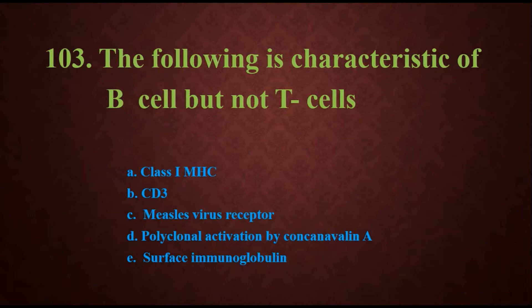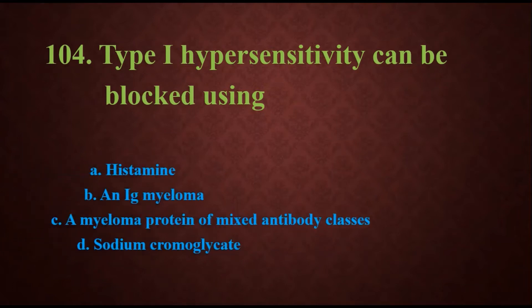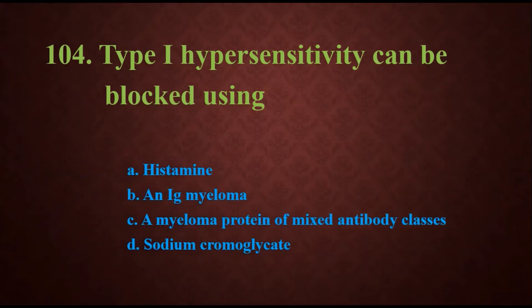Question 104: Type 1 hypersensitivity can be blocked using options: histamine, an immunoglobulin myeloma, a myeloma protein of mixed antibody classes, or sodium cromoglycate. The answer is sodium cromoglycate.